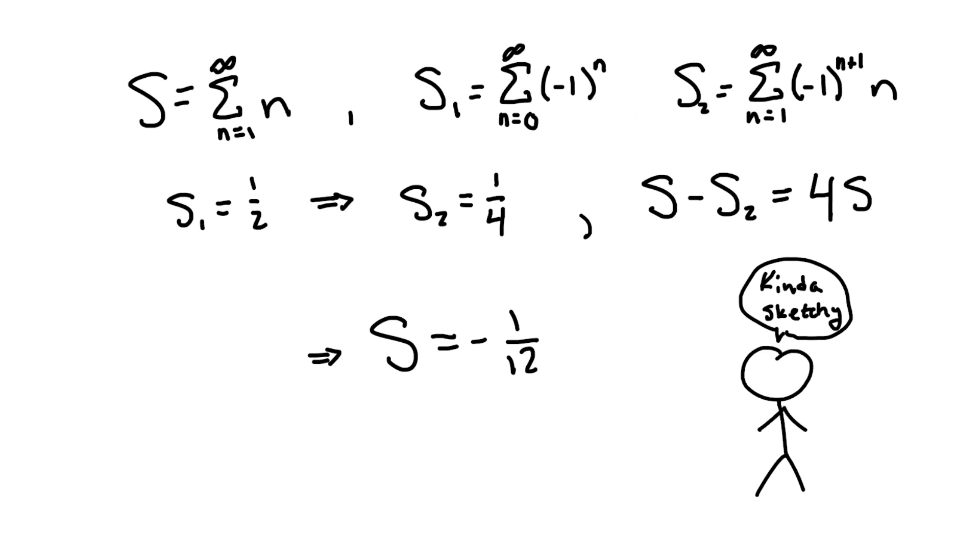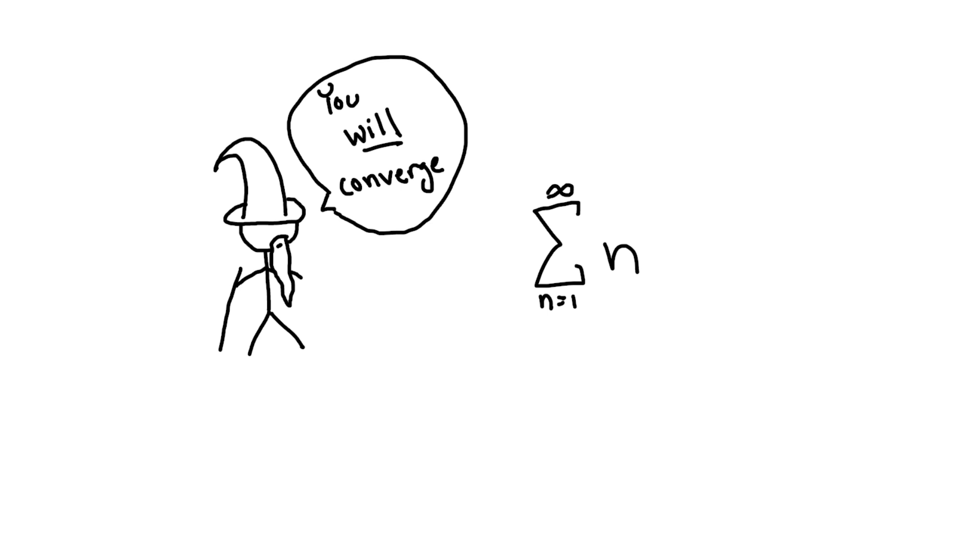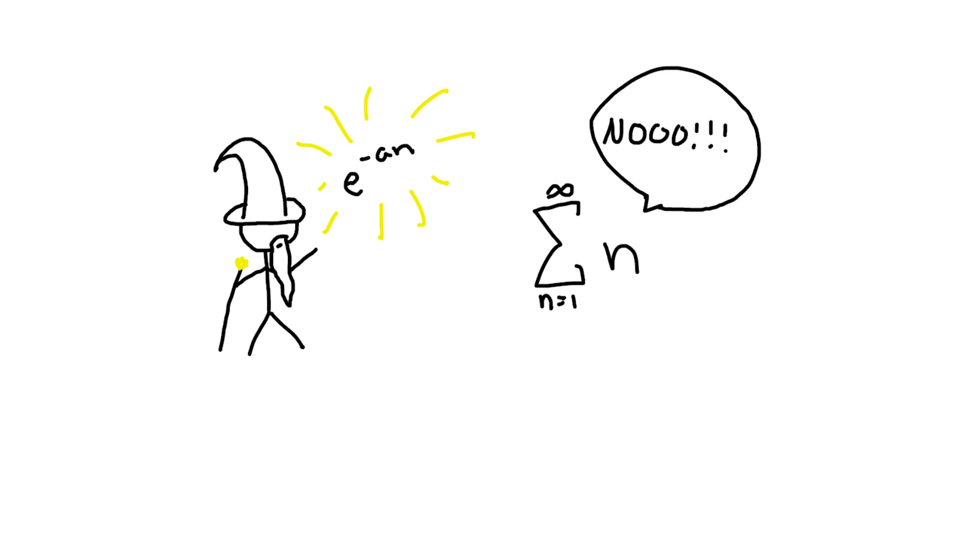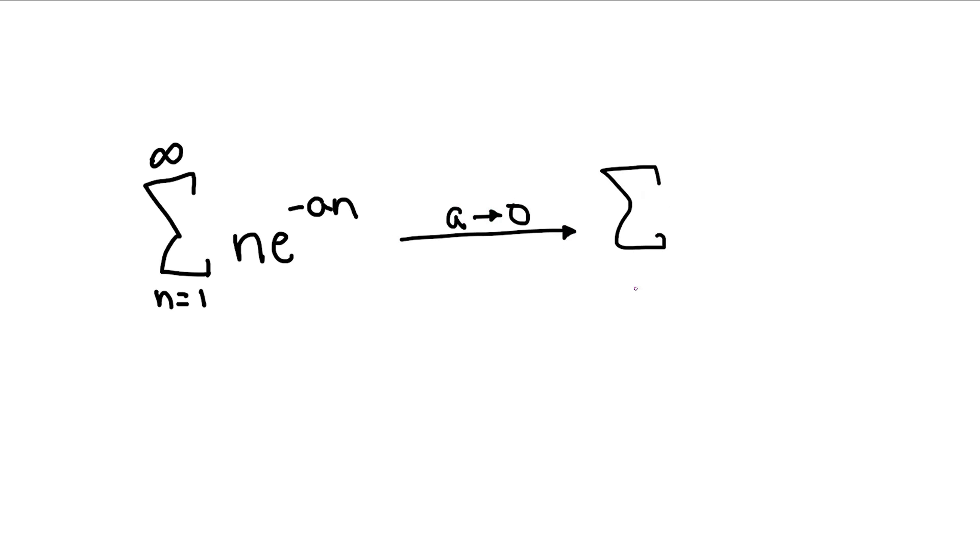So instead, what we'll do is force the series to converge, but do so in a way that we can recover the original sum by taking a limit. One great way to do this is by introducing an exponential into the sum, where we can get back to the sum we actually want by taking a to zero.